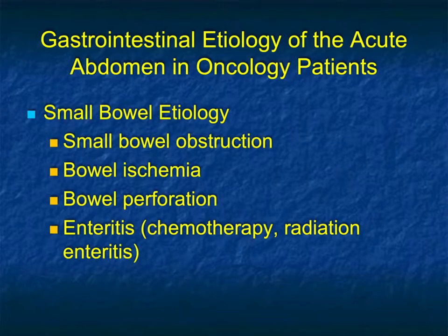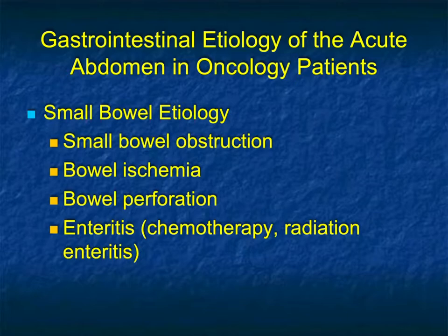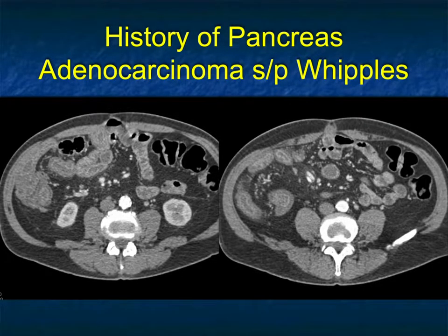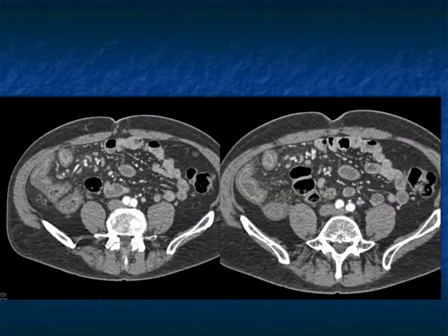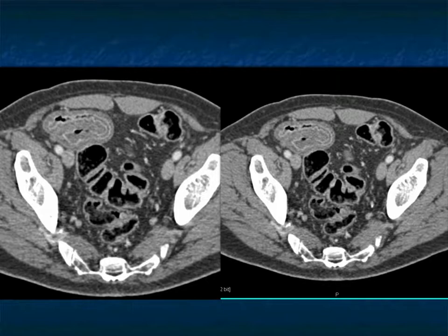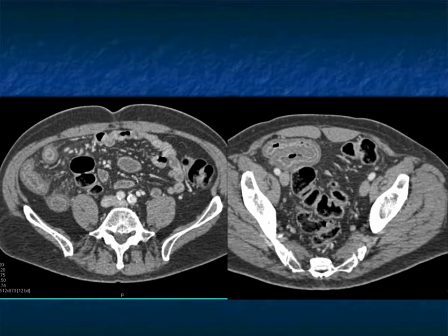When dealing with oncology patients, you need to think outside the box. Small bowel pathology — obstruction particularly — can be due to anything from ischemia, perforation, enteritis, to drug reaction. This patient is post-Whipple's procedure with abdominal pain; you're looking for an abscess, but there's marked thickening of the distal bowel. Like most pancreatic cancer patients with surgery, patients are often on chemotherapy, and they can develop chemotherapy-induced enteritis.